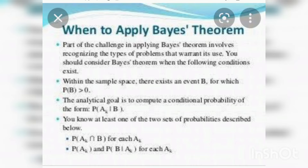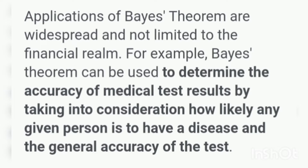When to apply Bayes' theorem? Part of the challenges in applying Bayes' theorem involves recognizing the type of problems that warrant its use. You should consider Bayes' theorem when the following conditions exist: there exists an event B for which P of B is greater than 0, the analytical goal is to compute the conditional probability of the form P of A given B, and you know at least one of two sets of probabilities — P of A intersection B for each A.